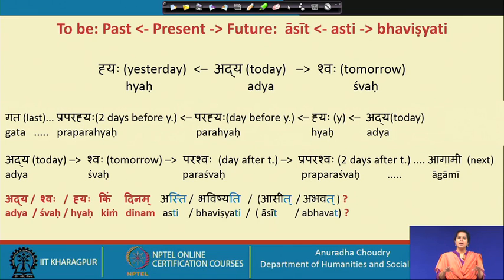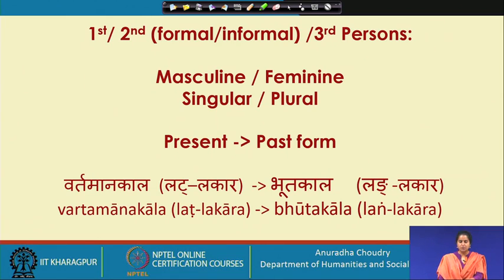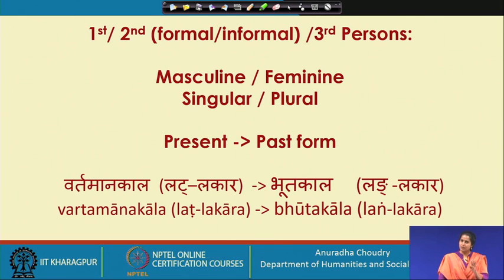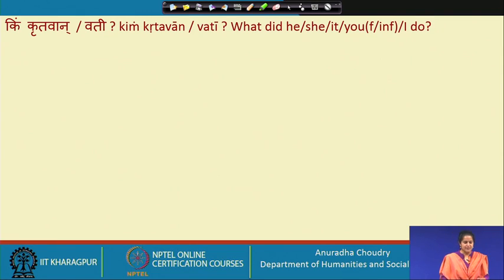Just to give you a feel of how the verb 'to be' is conjugated across the three timescales. Next we will look at the past form for first, second, and third persons — formal and informal — in masculine and feminine, singular and plural. The technical name for the past tense is bhutakala or langlakaaraha. To simplify things, I propose teaching a simplified past form. So: kim khritavan — for a man.